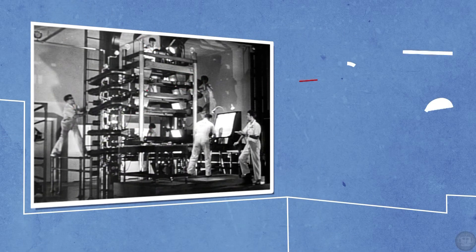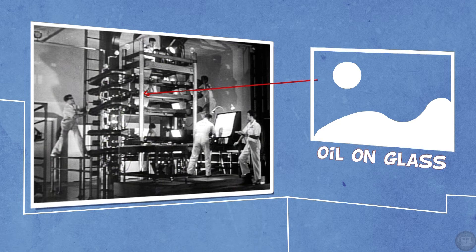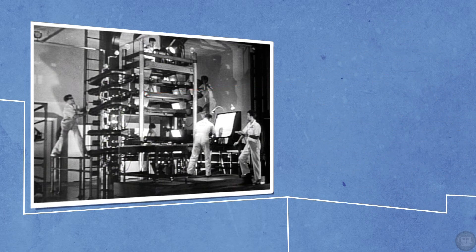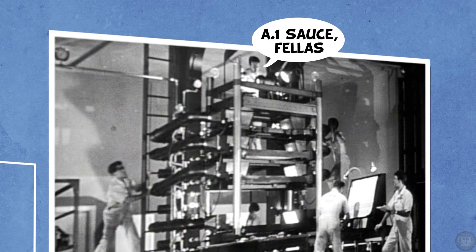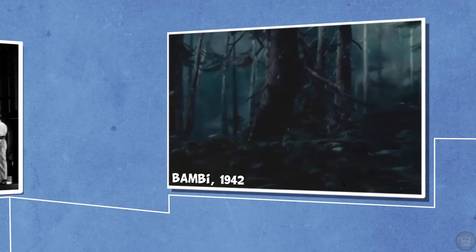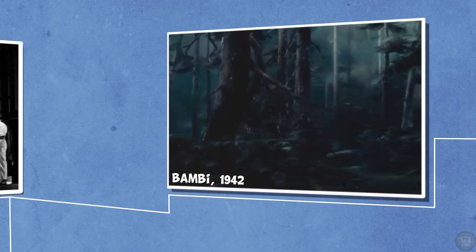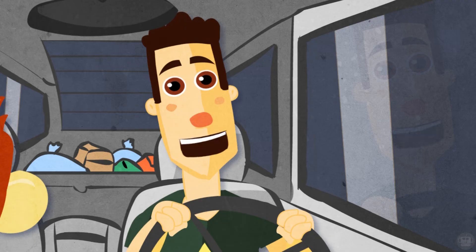These layers, by the way, are glass frames painted with oil — so one slip and you could lose hours worth of work. When all the layers were in position, the guy at the top would give the OK and take the shot. This process was repeated hundreds of times in order to animate the opening scene in Bambi.